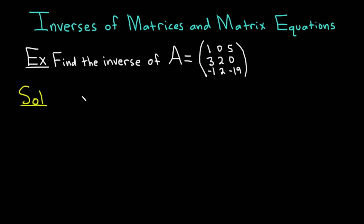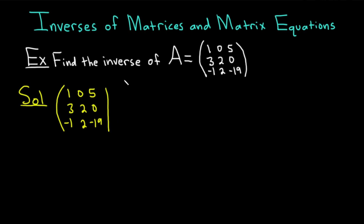Your first step is to write your matrix down again. Write down a parenthesis and then write the entries 1, 0, 5, 3, 2, 0, and negative 1, 2, and negative 19. Then you draw a line. Over here, what you want to do is put the identity matrix, which is 1, 0, 0, 0, 1, 0, and then 0, 0, 1.